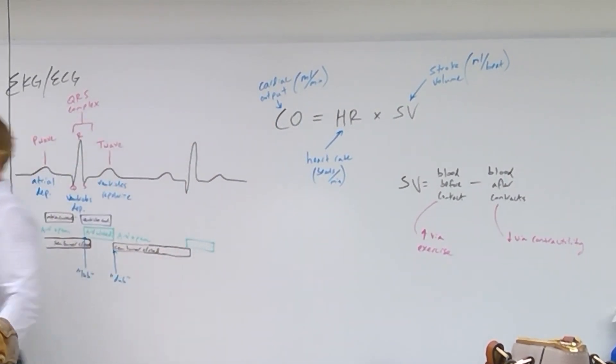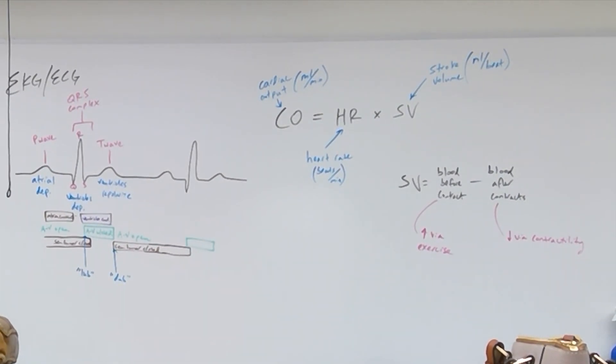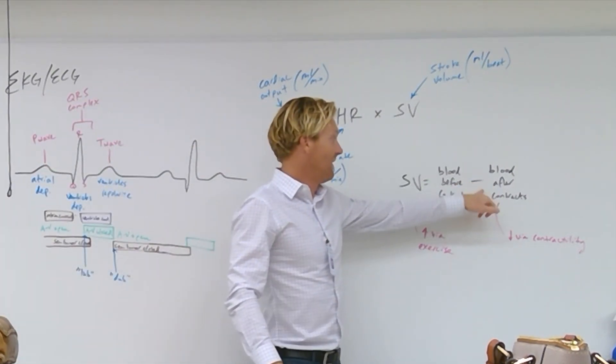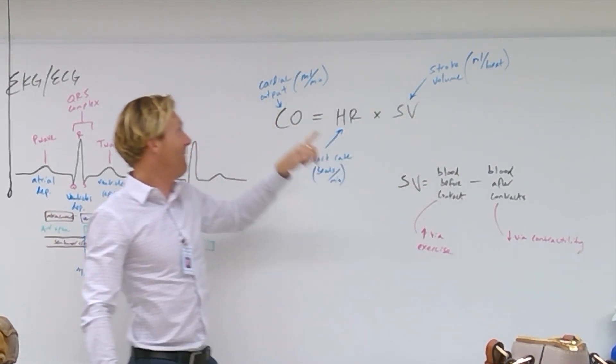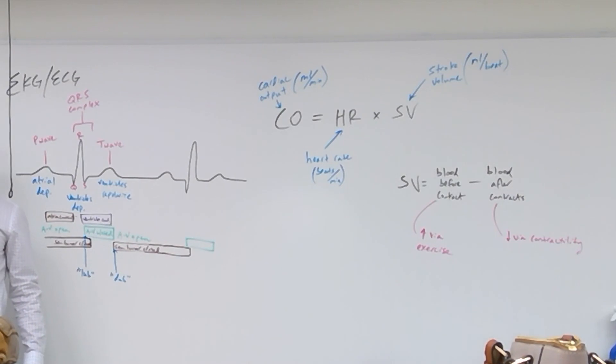Contractility is a term that describes how forcefully the heart is contracting. Sympathetic nervous system, it doesn't just tell the heart to beat faster. It tells the heart to beat stronger. And so, if the heart's working harder with each beat, it's going to squeeze out more blood with each beat. It's going to decrease the ending stroke volume. That's going to increase stroke volume. If we increase stroke volume, we increase cardiac output. So, there's the three basic ways that we can increase cardiac output. Increase heart rate, increase how much blood is in the ventricle before it contracts, or decrease how much blood is in the ventricle after it contracts.